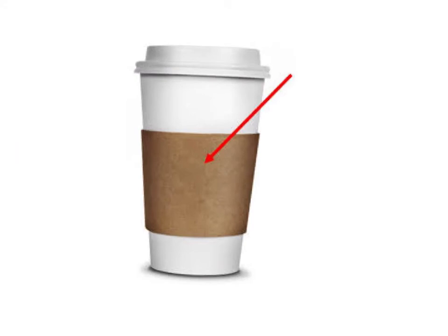Today's fun fact is the word ZARF — Z-A-R-F. You know those little cardboard things that you put around your coffee cup? It's not called a little cardboard paper thingy; it's actually called a ZARF. It gets its origins from the Middle East, where it was actually a metal holder put around a cup. So next time you grab a hot coffee, instead of saying 'give me another one of those little cardboard thingies,' you might want to say 'hand me a ZARF' and see if anybody knows what you're talking about.